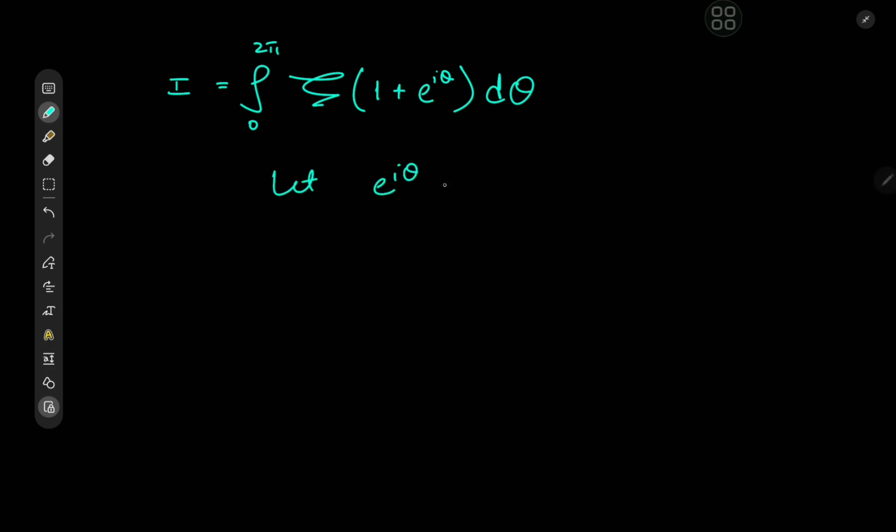this e^(iθ) function and call it equal to the new variable z. So on differentiating, we have ie^(iθ)dθ = dz, and this implies that dθ = dz/(ie^(iθ)).